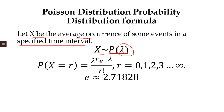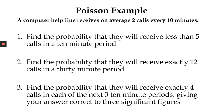The probability that X equals a certain number R is: Lambda to the power R, times E to the power minus Lambda, over R factorial — where R can be 0 up to infinity. Lambda is the average occurrence or average arrivals given, and E is the mathematical Euler constant with value 2.71828.